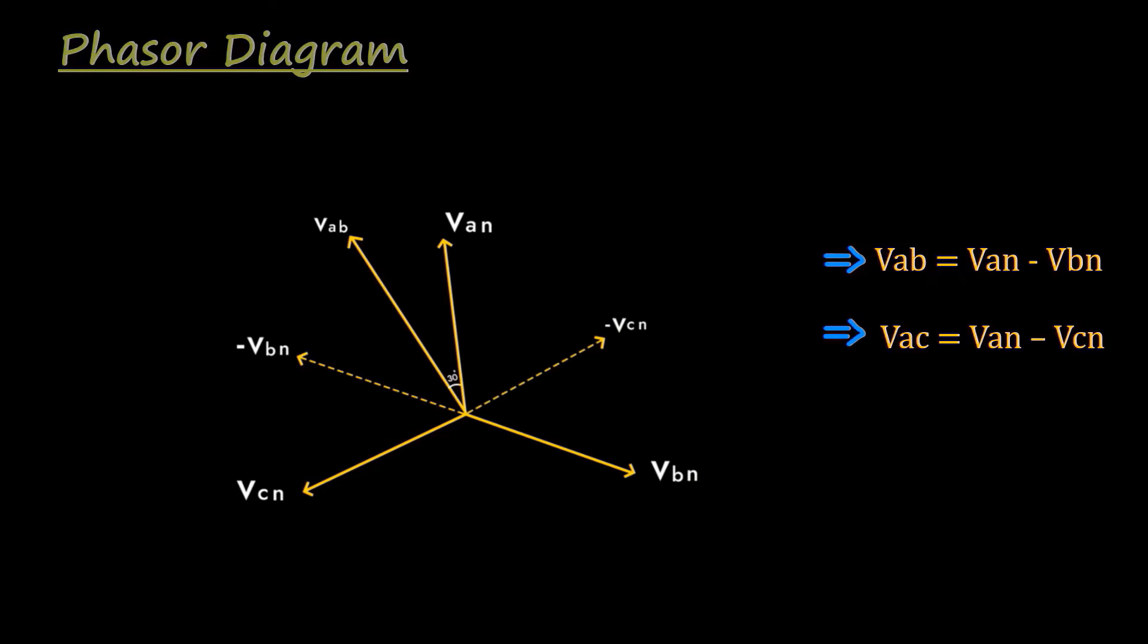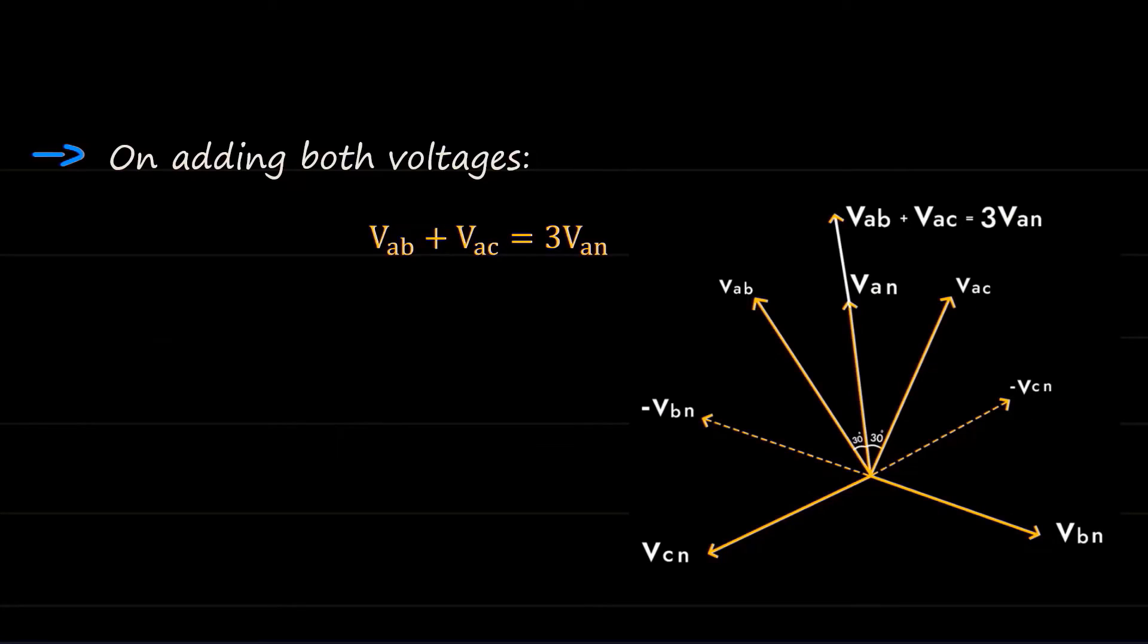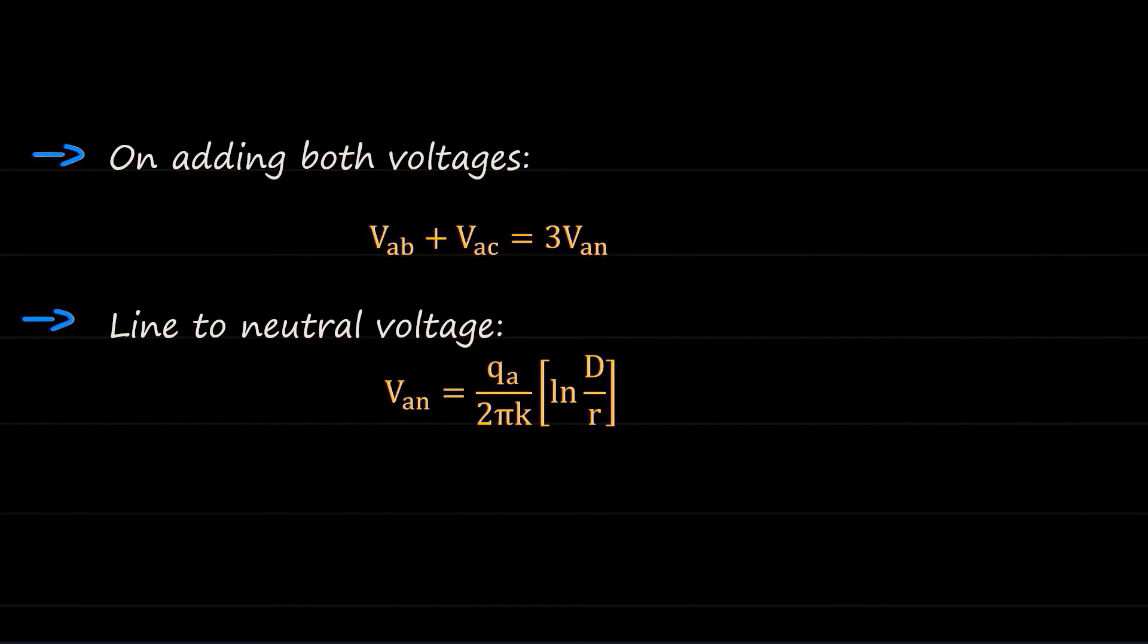we take the phasor diagram and draw phasors van, vbn, and vcn. We know that vab is equal to van minus vbn, and vac is equal to van minus vcn. Both are at 30 degrees from the van and on adding both the resultant vab and vac will be actually equal to the 3 van. So, the line to neutral voltage can be written as van is equal to qa over 2 times pi times k bracket open natural log of d over r bracket close.